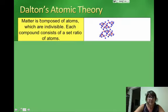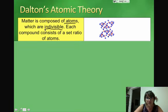So here's the first one. All matter is composed of atoms, which are indivisible. Then an atom would be the smallest part of matter that you could possibly have, and each compound consists of a set ratio of atoms. Like water would always be two hydrogens for every one oxygen, and carbon dioxide has one carbon for every two oxygens every single time, but that's how we make compounds.